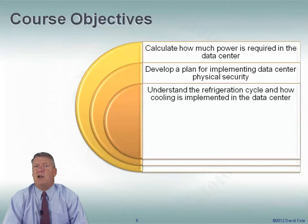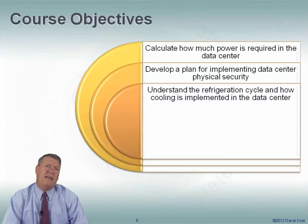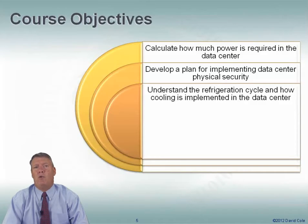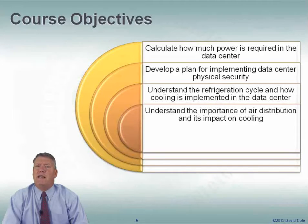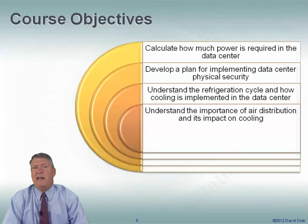We're going to look at the refrigeration cycle as we move into cooling. How does the refrigeration cycle work? How is cooling implemented in the data center? We're going to go all the way back to the basics of the refrigeration cycle because I think it's very important to look at that when we're choosing devices in the data center and how are we going to do cooling in the data center to understand how that whole refrigeration cycle works. We're going to understand the importance of air distribution and its impact on cooling in the data center. It's one thing to create cold air. It's another thing to get the cold air to where we need it in the data center. If we don't do both parts of that job, we're not going to be able to cool the equipment in the data center. And as equipment in the data center gets higher and higher density, it's more and more important that we get the cold air to the right place.